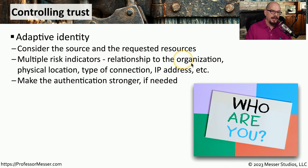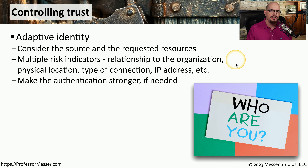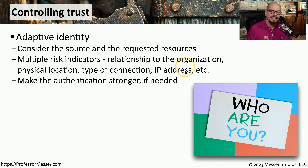This might also include an examination of the relationship of this person to the organization — are they an employee, a contractor, full-time or part-time? All of this goes into the evaluation of the authentication process. We also want to look at physical location, the type of connection in place, IP addresses, and anything else that can help identify information about this user. Once we examine all these variables, our systems can automatically create a stronger authentication if needed.